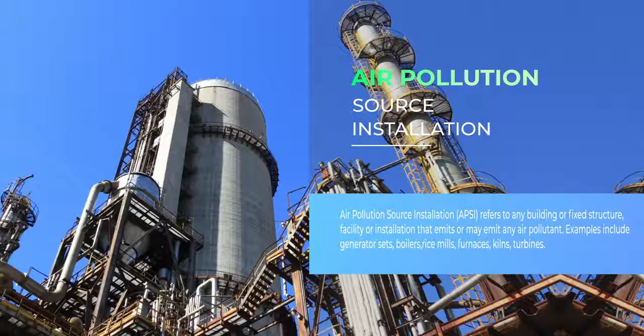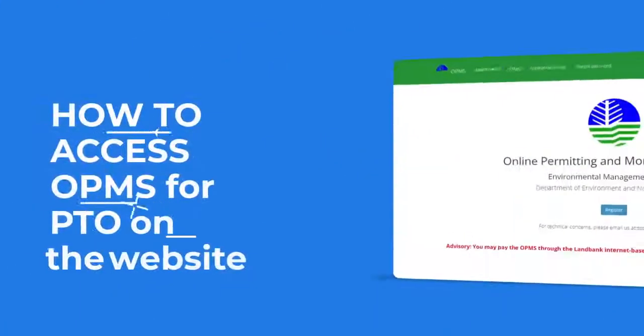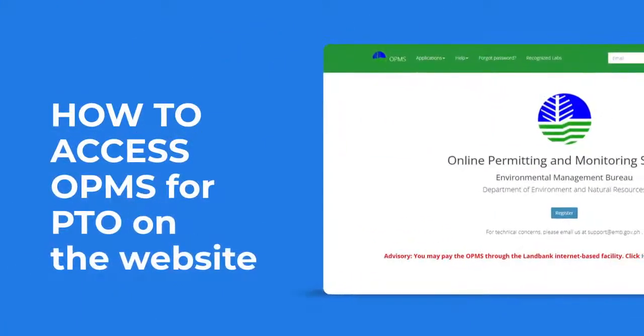Examples of APSI include generator sets, boilers, rice mules, furnaces, kilns, and turbines. Help us safeguard the future of our environment by following these 7 easy steps.